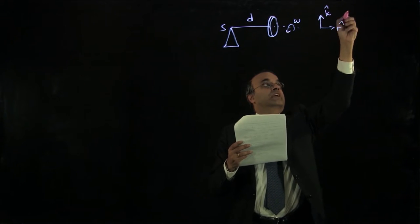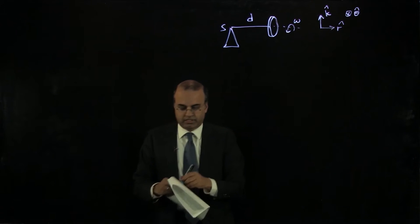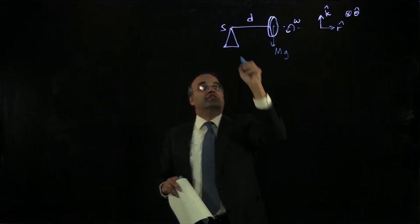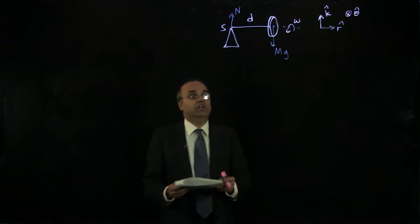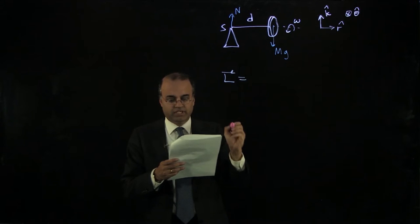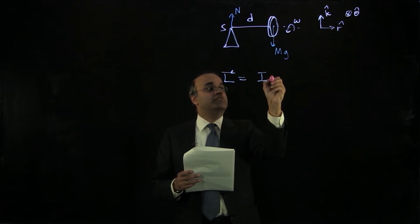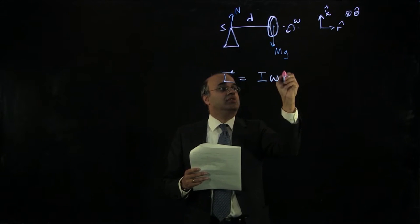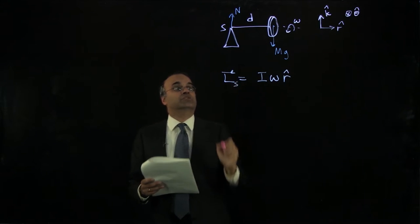That's the k hat direction, and theta hat is into the screen. The weight is acting downwards at the center of mass of the wheel. There's a normal force acting upwards. So the spin angular momentum with respect to point S is just equal to the moment of inertia of the disk about its center of mass times the angular speed of the spin, and that's directed in the plus r hat direction. This is the angular momentum with respect to point S.